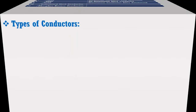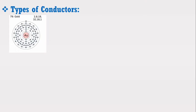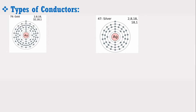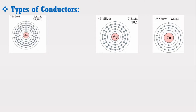Before discussing copper, it is better to discuss what other conductors are available. Gold is also a good conductor and has only one electron in its outer shell as shown in its atomic structure. However, gold is very expensive, therefore it cannot be used as a conductor in the overhead transmission line. Silver also has only one electron in its outer shell, making it a good conductor, but it is also not used in transmission lines due to its high cost. Copper also has one electron in its outer shell, therefore it can be used as conductor material in the overhead transmission line.